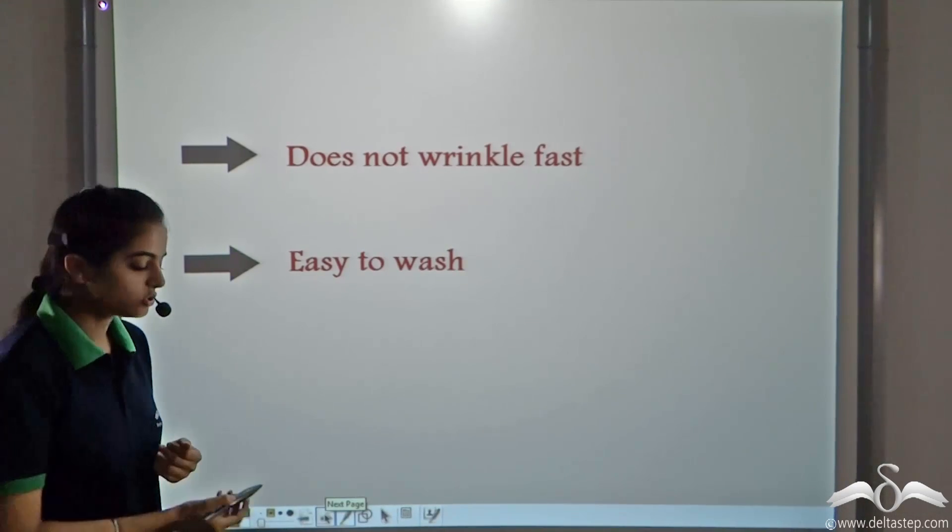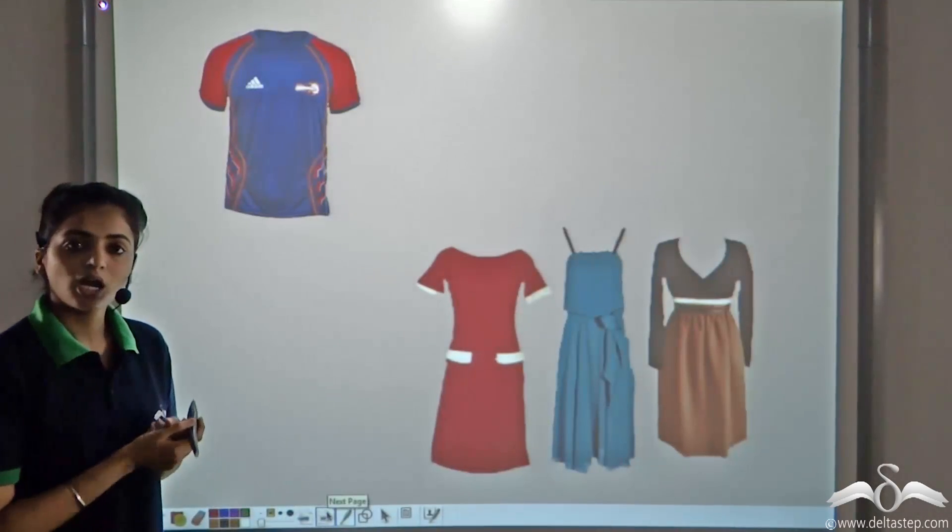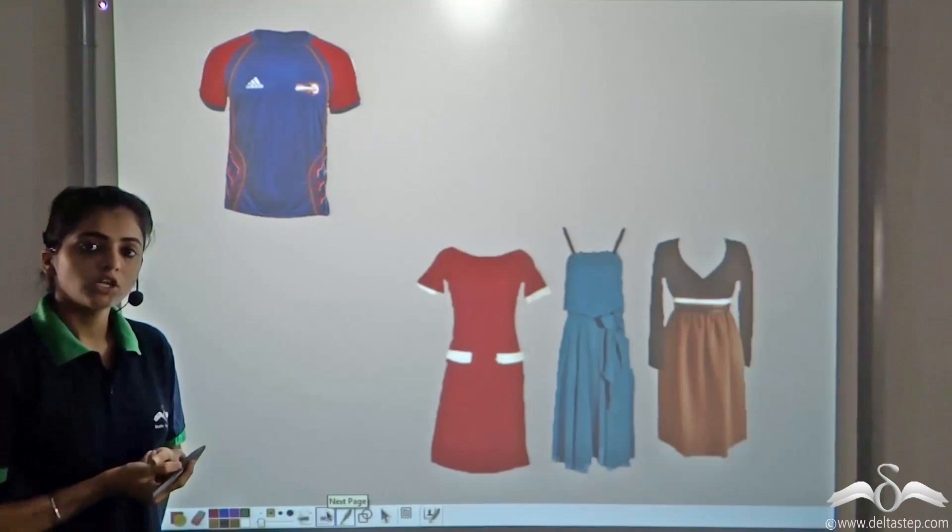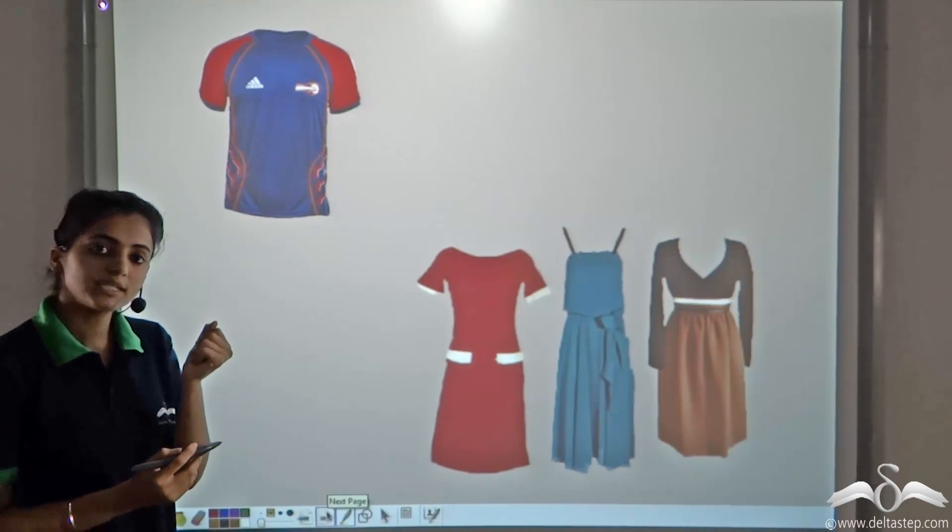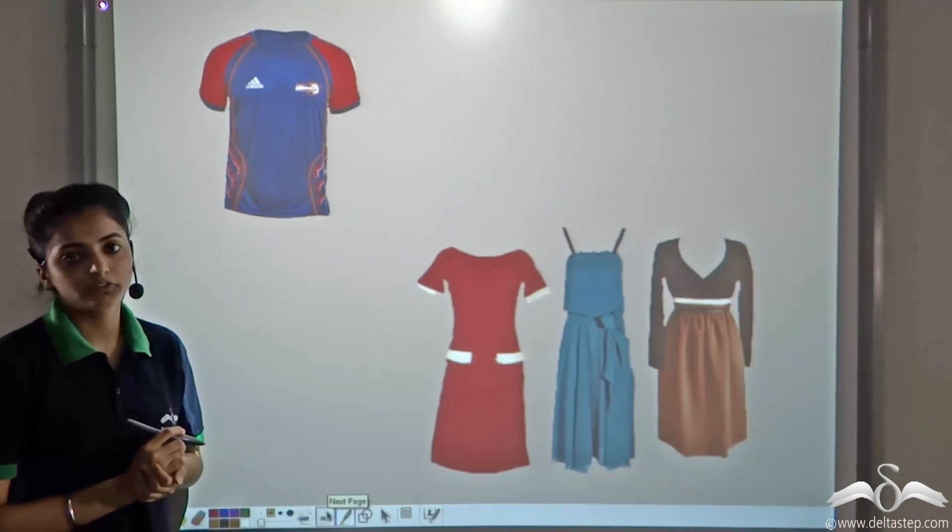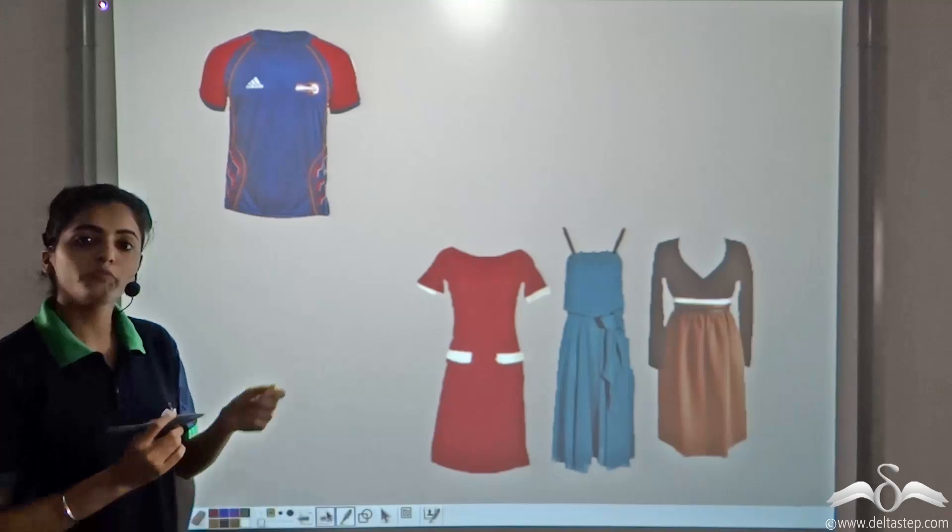So nowadays, many dresses that you see are made up of polyester. For example, these jerseys that you see, they have a shiny look, easy to wash, and they do not wrinkle fast. So they are made up of polyester.